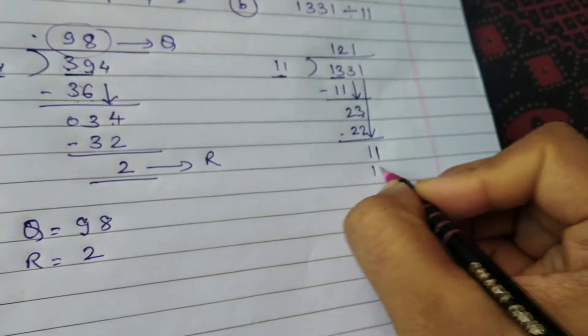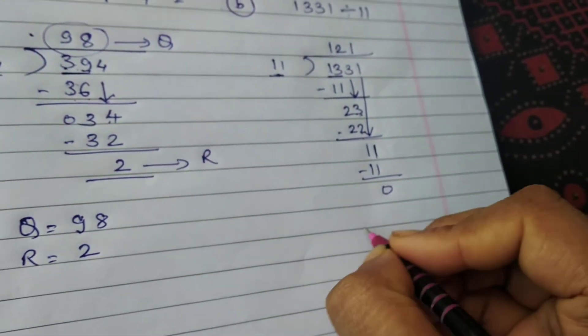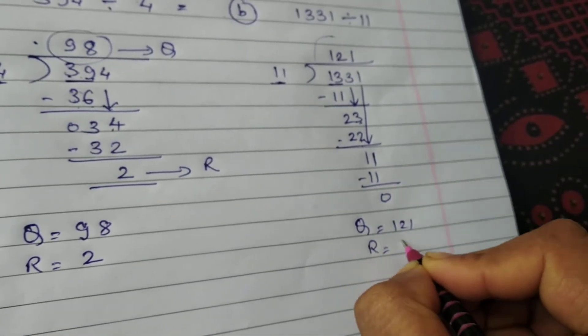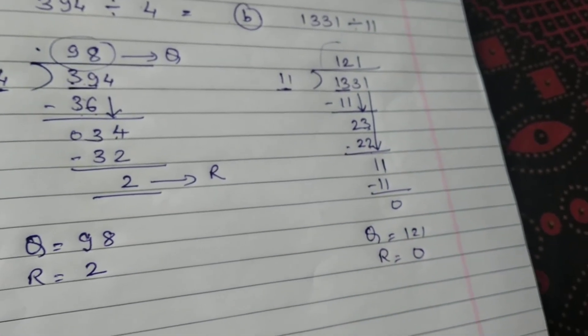So 11 ones are 11, 0. So what is your quotient here? 121. What is your remainder here? 0. See how easy it is?